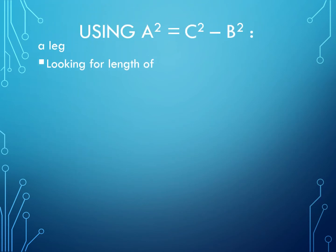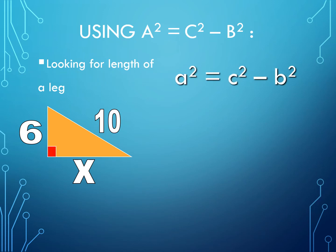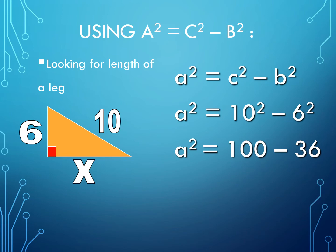How about if we are looking for the length of a leg? Given one of the legs and the hypotenuse, we are going to solve for the other leg. We use A squared is equal to C squared minus B squared. Substituting the values: 10 squared minus 6 squared gives us 100 minus 36, which equals 64. Getting the square root of 64, it is equal to 8. Therefore, side X is equal to 8.